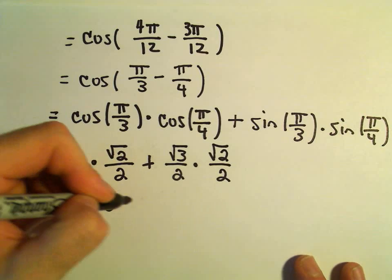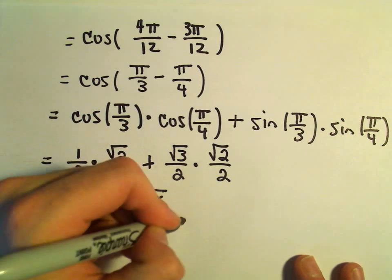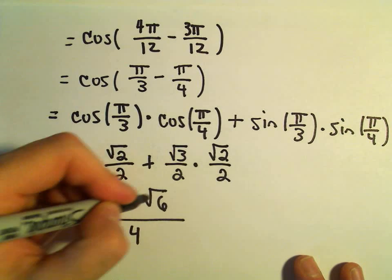So it looks like we get square root of 2 plus root 3 times root 2 is going to be root 6. Again, we have our denominator, 2 times 2, which is 4.